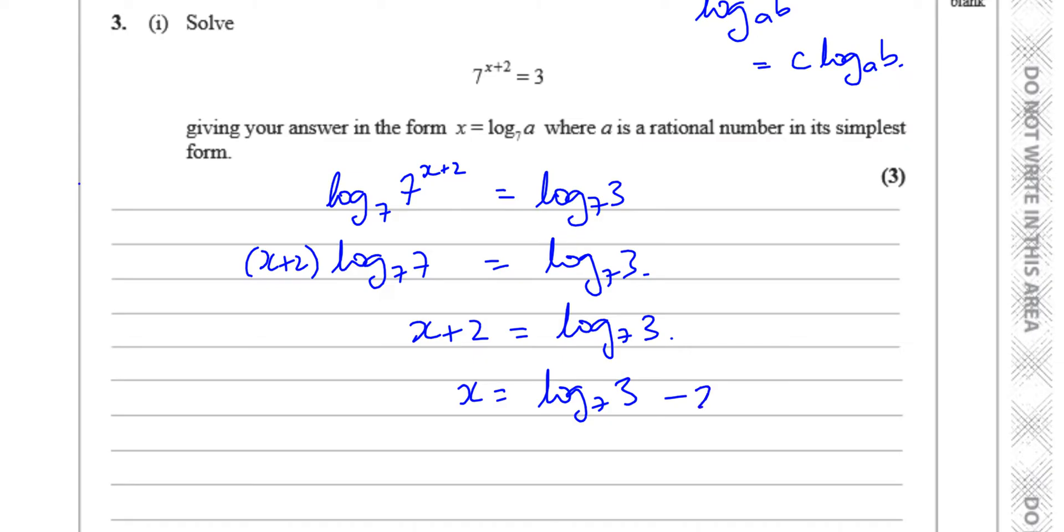So you're left with x plus 2 equals log to the base 7, 3. And then x equals log to the base 7, 3 minus 2. Now, the problem here is they want us to express this in the form of log to the base 7a, and they don't want to have something else added to it.